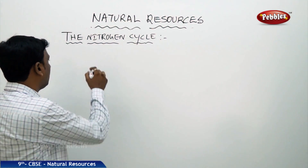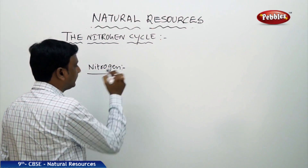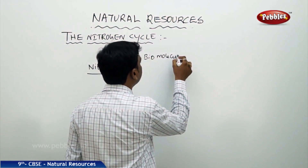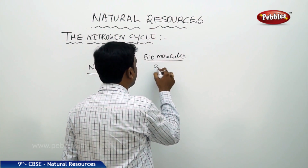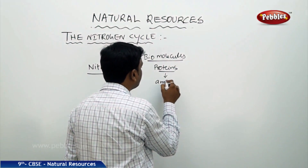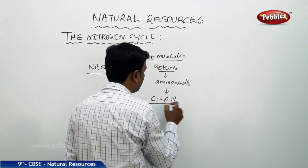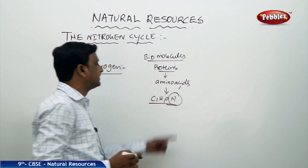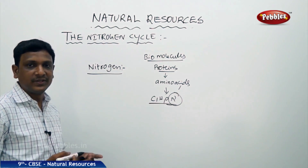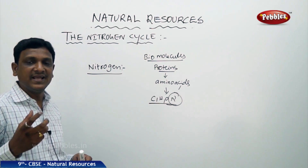Now let us look at the nitrogen cycle. What is the importance of nitrogen? Certain biomolecules — the molecules present in our body — the most important ones are proteins. They are made up of amino acids. Amino acids are made up of carbon, hydrogen, oxygen, and nitrogen. So nitrogen is an important constituent of amino acids, and amino acids make up the proteins. Every living organism needs proteins to build up its cells, cell wall, cell components, and cell functions. Every enzyme is a protein.